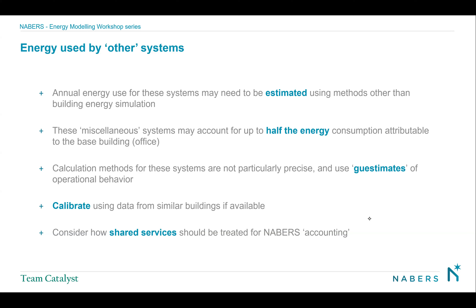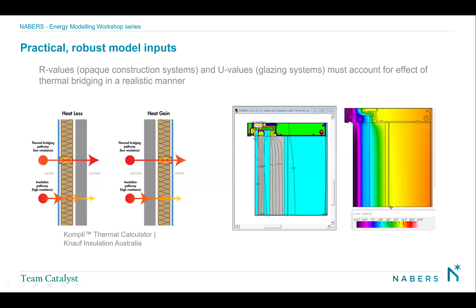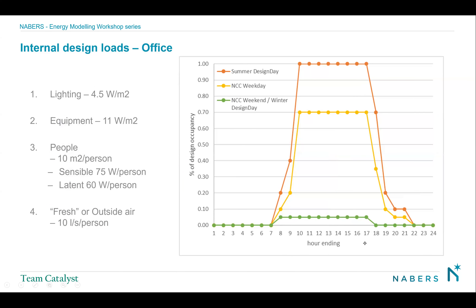Looking at the inputs that go into the model, you start from the building fabric side. You want to use realistic numbers for everything. When you're talking about R values or U values, you do need to think about thermal bridging — that bridging is going to reduce the performance, and you need to account for that in your energy simulation. This is no longer about compliance; this is about what will really come out of the meter.